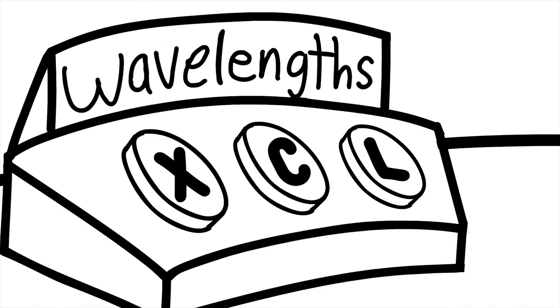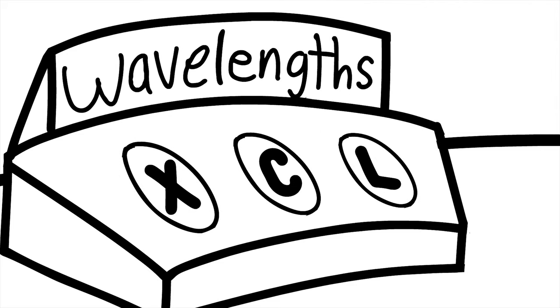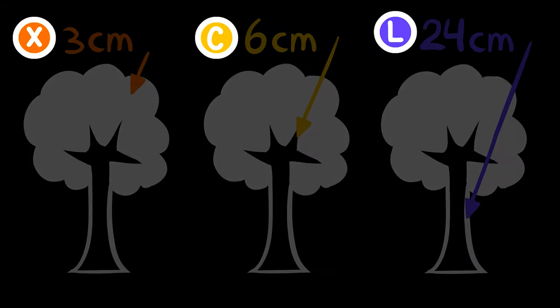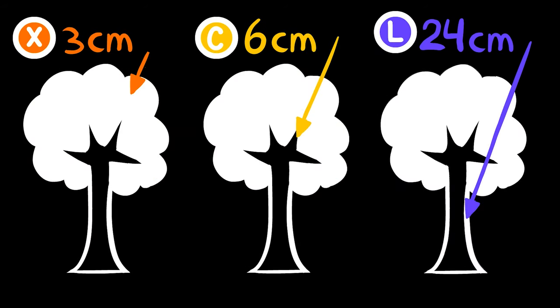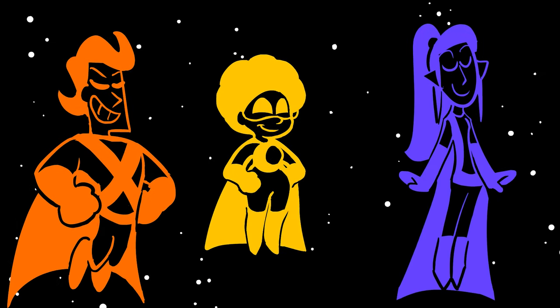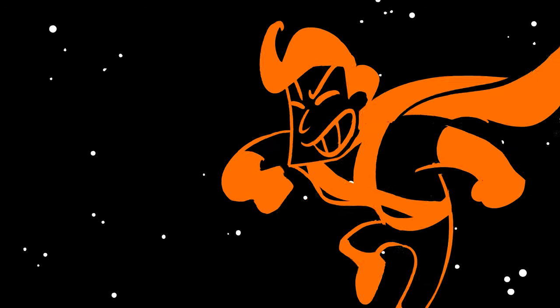SAR sensors transmit signals at different wavelengths. In radar, these wavelengths are often grouped into bands. The most commonly used are X, C, and L. Depending on the band, the emitted signal can penetrate into forest canopies and provide information about the canopy structure or even what lies below. Each of these superhero wavelengths specializes in monitoring different aspects of forest structure.